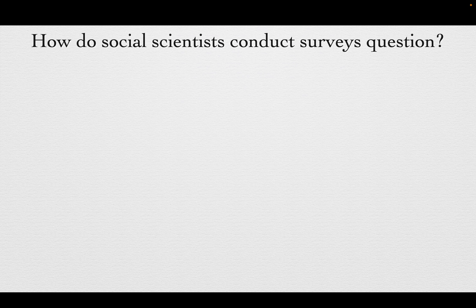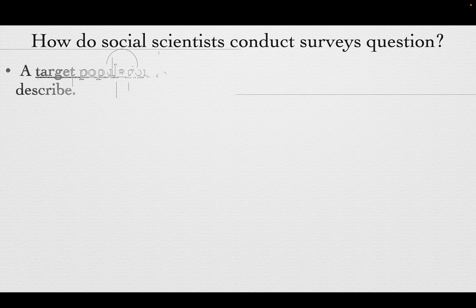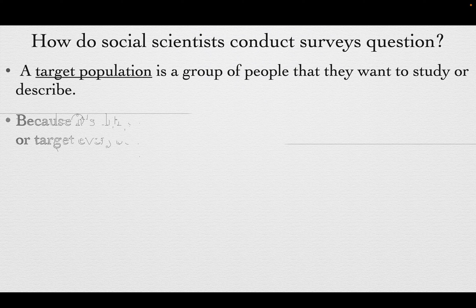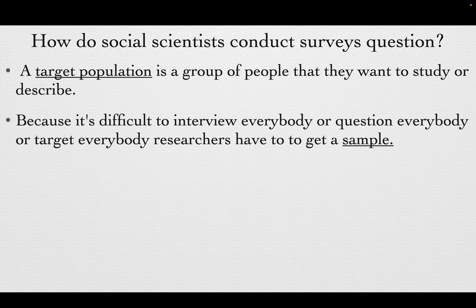How do social scientists conduct accurate survey questions? First, you have to have a target population — the group of people you want to study or describe. Just like a hypothesis, you have to establish what you think is going to happen. With a survey, what group are you specifically trying to understand? You can't understand everybody all the time. The more specific you get, the better — then you establish what's called a sample.